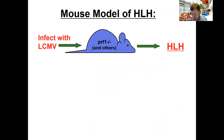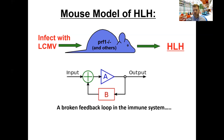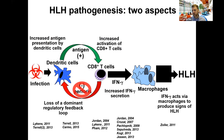Many years ago, after the discovery of perforin as the cause of HLH, we began modeling the disease in animals. When we challenged these animals with an infectious agent — in this case LCMV — they developed HLH. To summarize, in addition to its previously described function in resisting infections, this pathway also has a critical feedback function in the immune system. When it's missing, an essential negative feedback loop is broken.